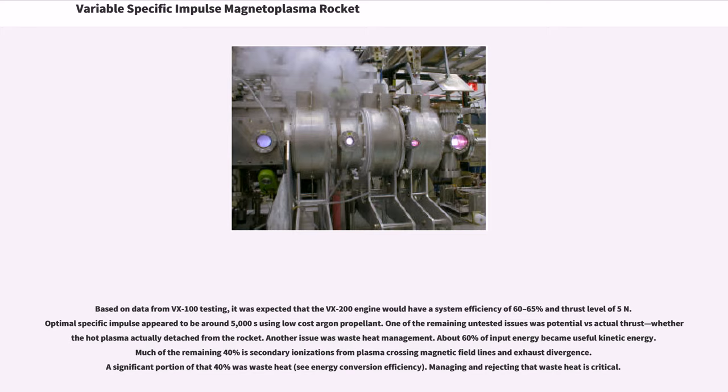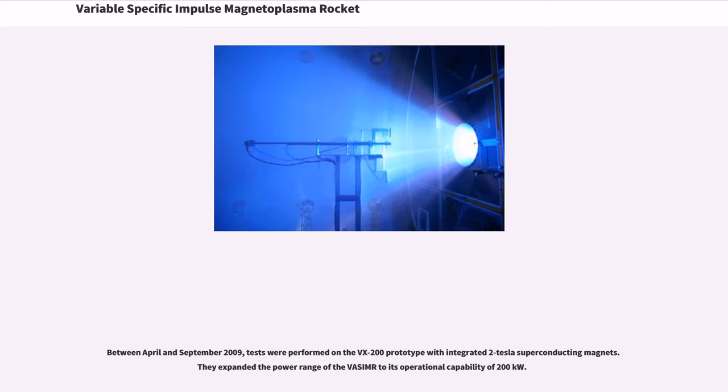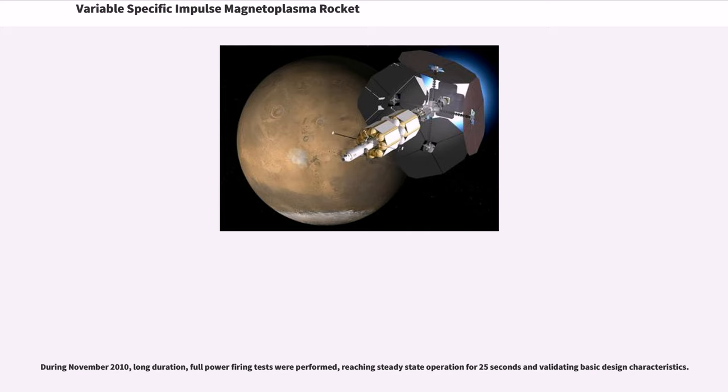Managing and rejecting that waste heat is critical. Between April and September 2009, tests were performed on the VX-200 prototype with integrated two Tesla superconducting magnets. They expanded the power range of the VASIMR to its operational capability of 200 kW. During November 2010, long duration, full power firing tests were performed, reaching steady state operation for 25 seconds and validating basic design characteristics.